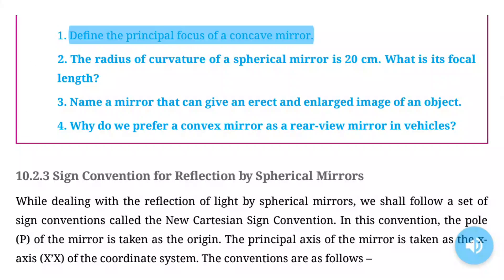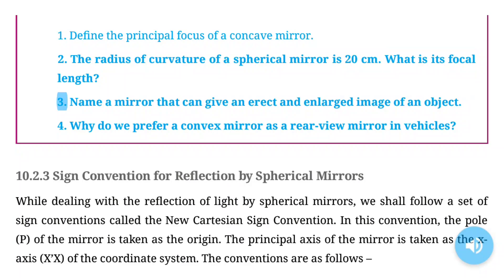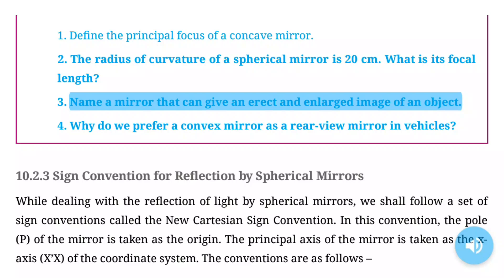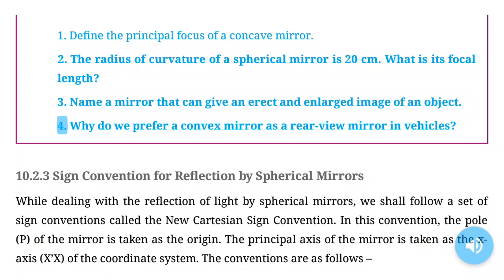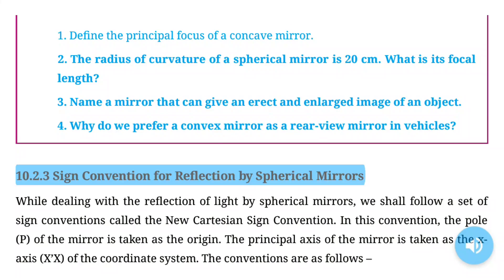Questions: (1) Define the principal focus of a concave mirror. (2) The radius of curvature of a spherical mirror is 20 cm. What is its focal length? (3) Name a mirror that can give an erect and enlarged image of an object. (4) Why do we prefer a convex mirror as a rear-view mirror in vehicles?